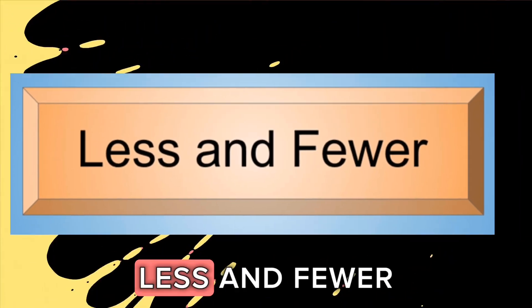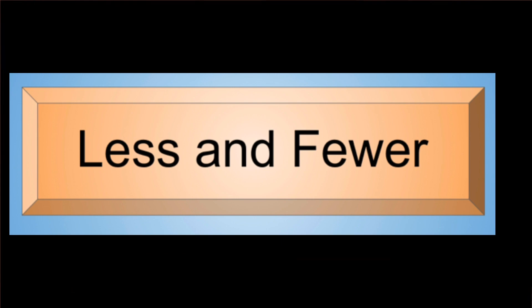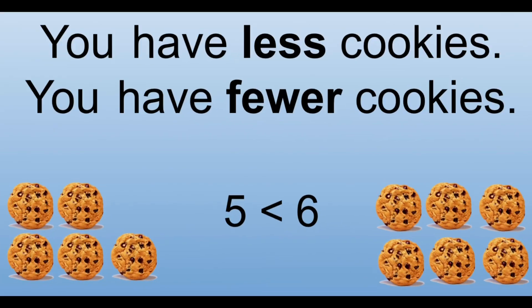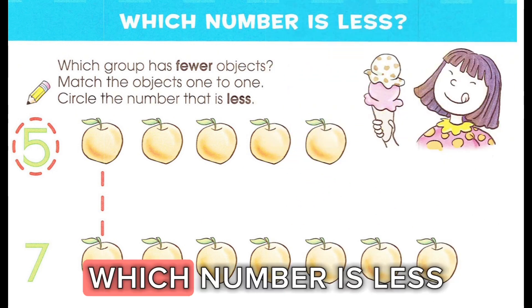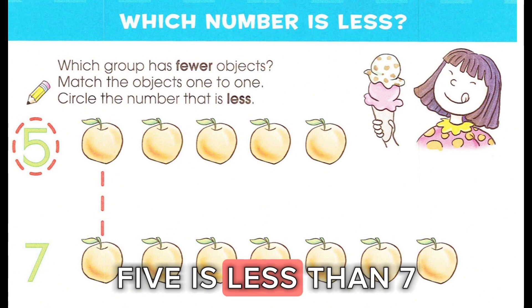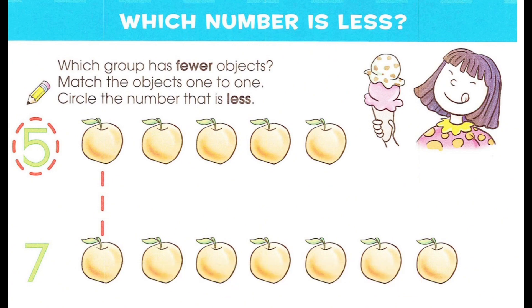Less and fewer. You have five cookies. I have six cookies. You have less cookies. You have fewer cookies. Which number is less? Five is less than seven.